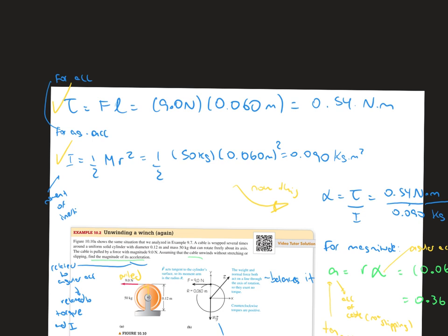In regards to the inertia, we use the equation one-half mass times radius squared, because we also have those values in the problem. So the inertia is going to be one-half times 50 times 0.060 meters squared, and that should give us 0.090 kilograms per meter squared.